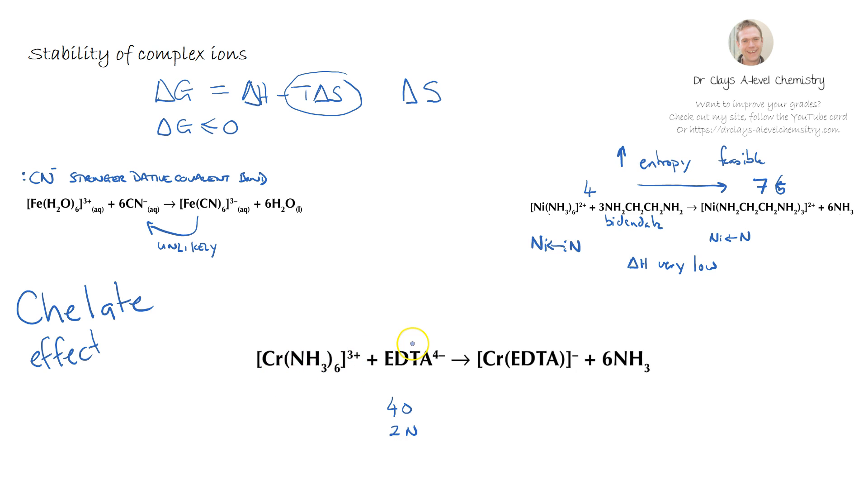The chromium NH3 6 has got just one complex and one ligand so we have got two moles or particles on the left hand side while on the right hand side we are forming seven particles. So once again we see a positive entropy change. The enthalpy change is still fairly low, maybe towards zero, and therefore the reaction is feasible because we are seeing an increase in entropy.